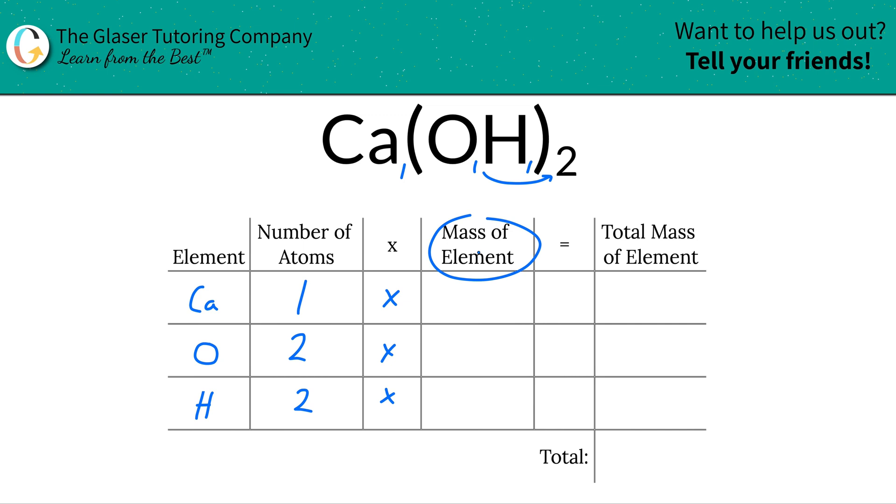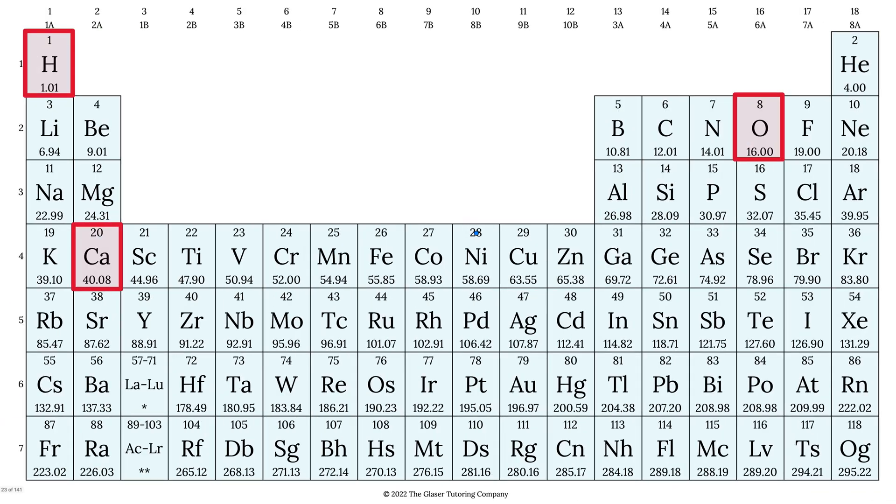Where do we find the mass of the elements? You got it, periodic table. Let's take a look. So we got calcium here, hydrogen, and oxygen. So calcium is 40.08, hydrogen is 1.01, and oxygen is 16. Those represent grams per mole if you're finding molar mass, or amu if you're finding molecular mass.